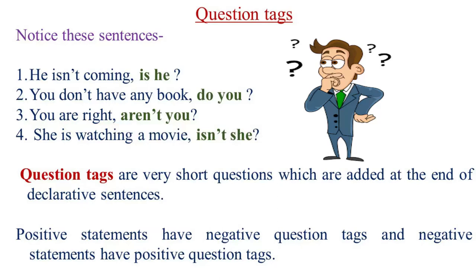Now, did you notice the question tags in all the given sentences? Yes, you are right. The question tags are: Is he? Do you? Aren't you? And Isn't she? We also see that a comma separates the statement from the question tag, and a question mark is put after the question tag.